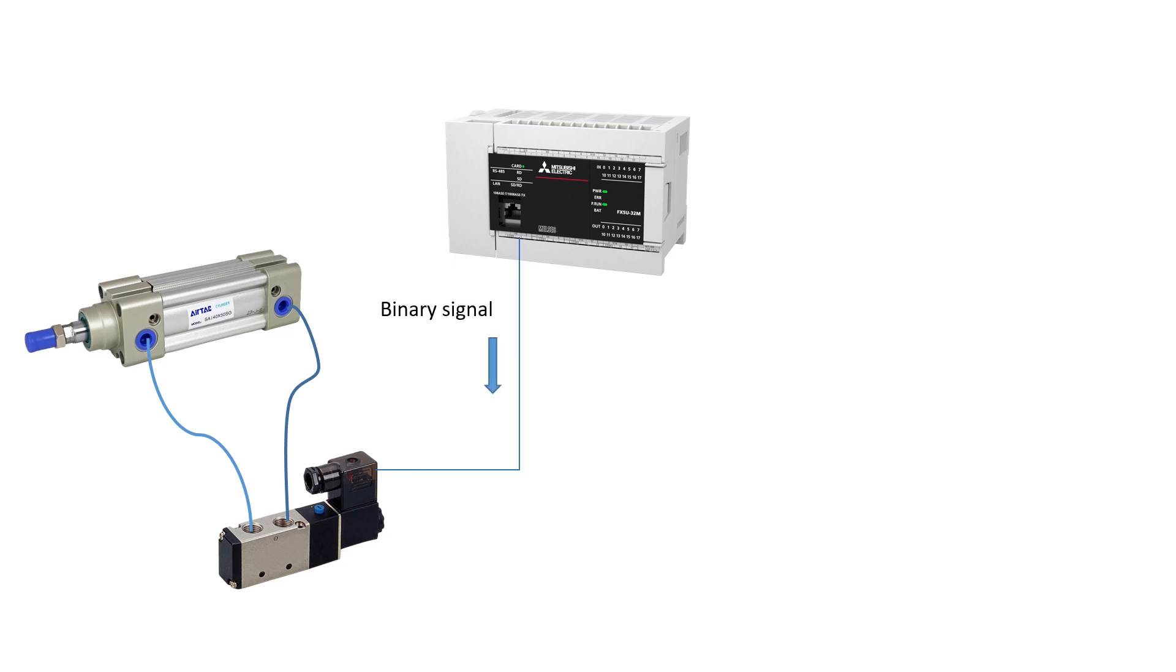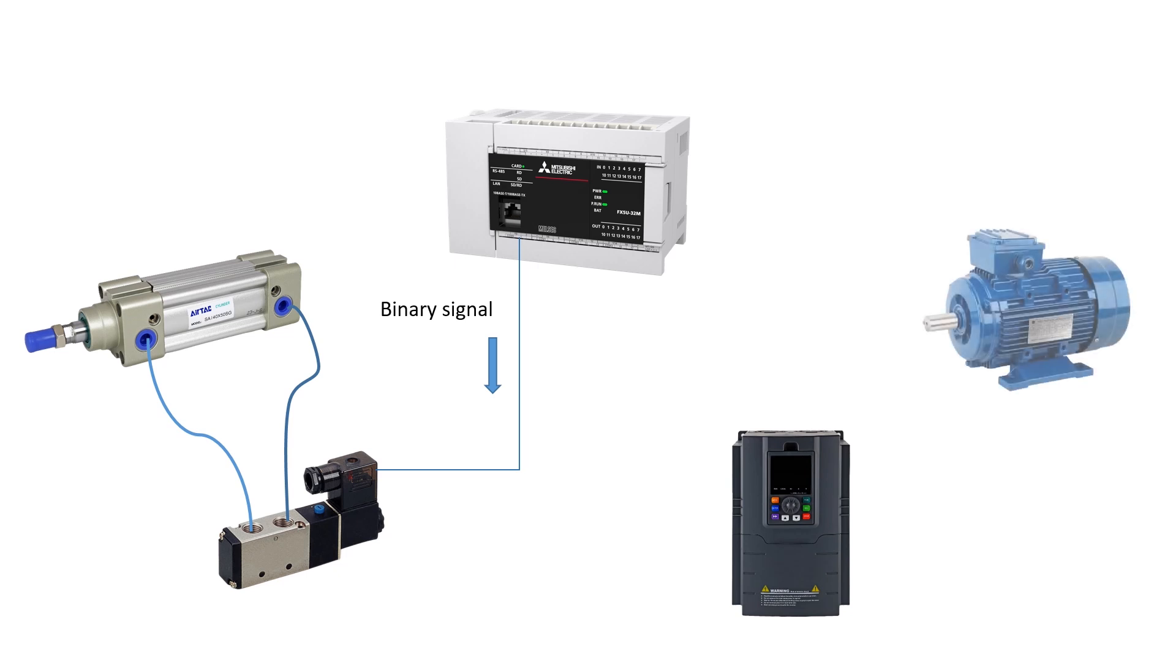One more example is operating an induction motor through a variable frequency drive. The VFD receives signals from the PLC to control the speed of an AC motor by varying the frequency and voltage supplied. Here, the PLC sends an analog signal to the VFD to regulate the motor speed based on the application's control requirements.